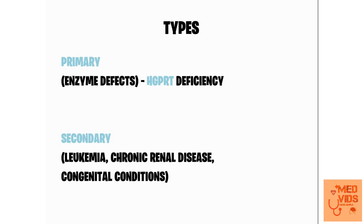There are two main types of gout: primary gout and secondary gout. Primary gout is the one in which gout is the main feature of the disease. For example, there's an inherited disease characterized by deficiency of an enzyme called HGPRT. In the deficiency of this enzyme, gout manifests as the primary feature, so those conditions are called primary gout.